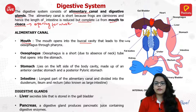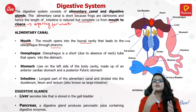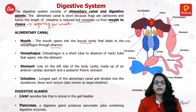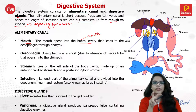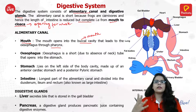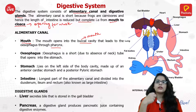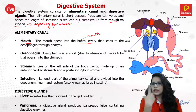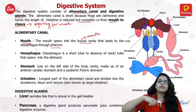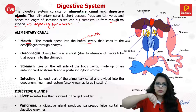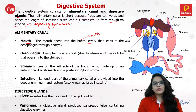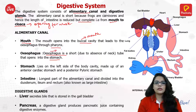The mouth opens into the buccal cavity, which leads to the esophagus through the pharynx. Food — insects — is caught with the tongue. From the mouth cavity, it goes to the pharynx, then through the esophagus. The esophagus is short due to the absence of a neck, and it opens into the stomach.